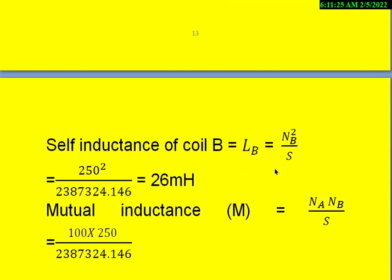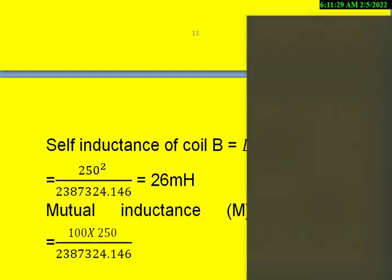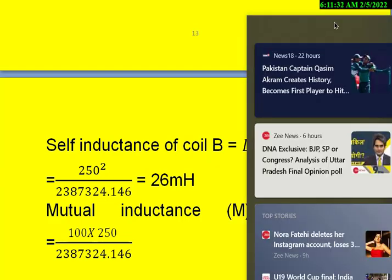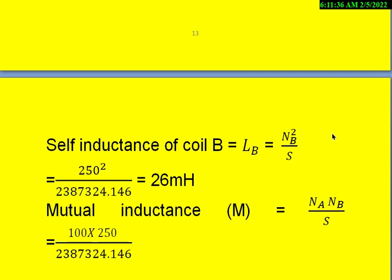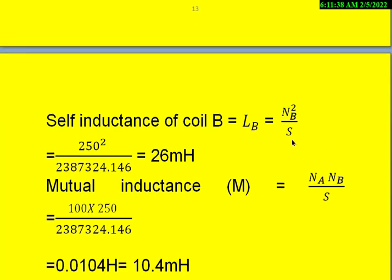Similarly, self-inductance of coil B we can calculate as NB square divided by S, where NB means the coil B number of turns. And S is the reluctance of the core which is common for both the coils.